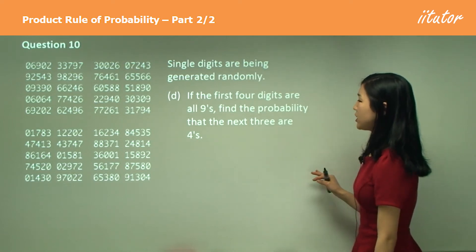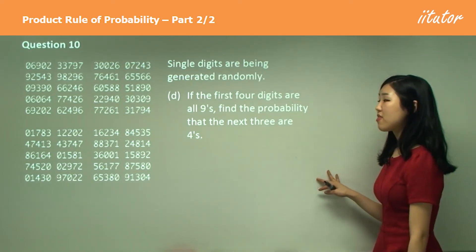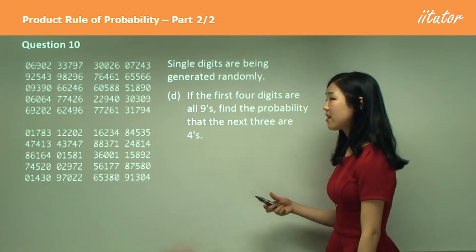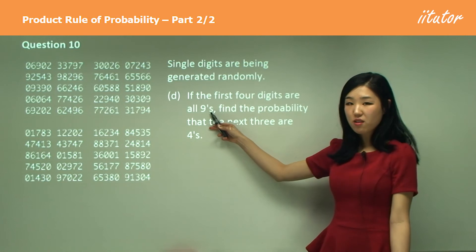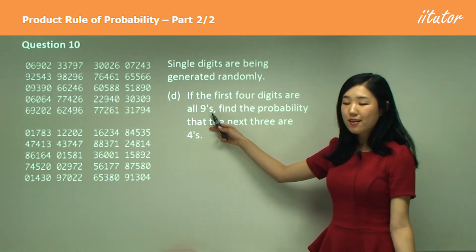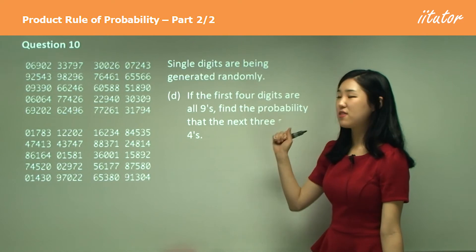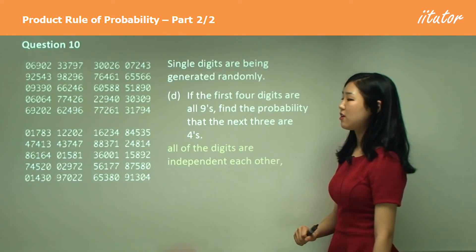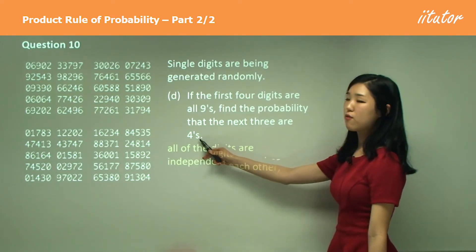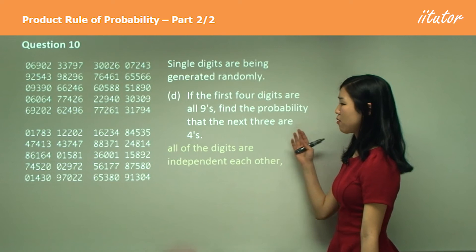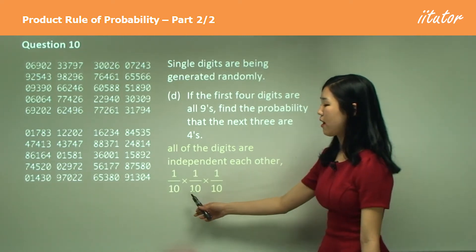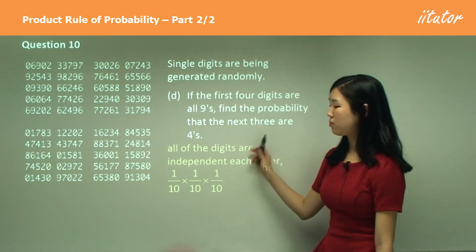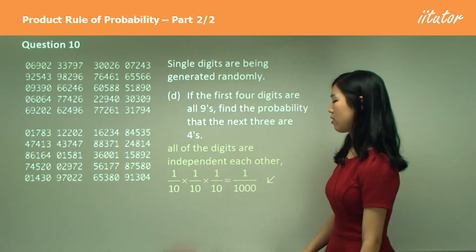Part D: if the first four digits are all nines, find the probability that the next three are fours. Again, does it matter if the first four digits were nine, zero, two, or five? It doesn't matter — they're just putting that in to trick you. All digits are independent of each other. Getting a four is one out of ten, so we multiply one-tenth × one-tenth × one-tenth for the next three numbers, which gives one over one thousand.